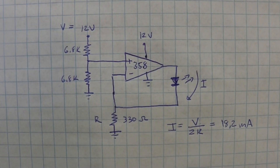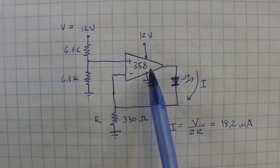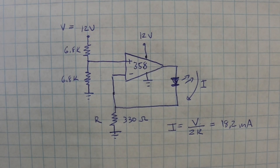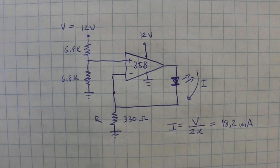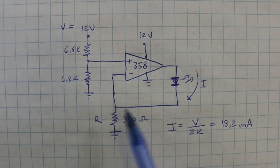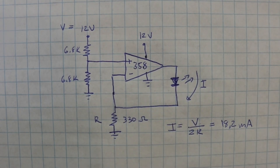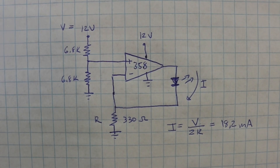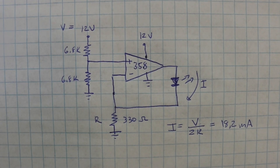Here's the circuit. I am using a 358 op amp, which is very common. Here is the LED that we want to drive, and a 5 mm LED draws a current of between 15 and 25 milliamps.